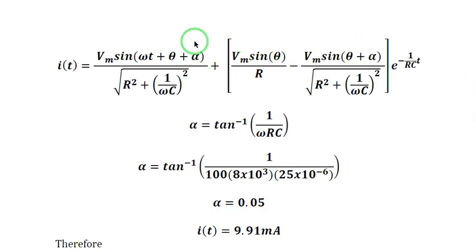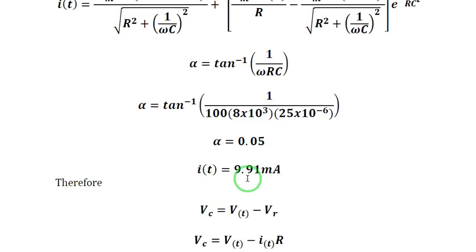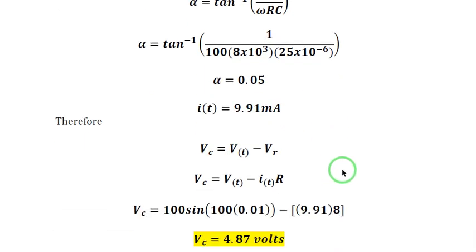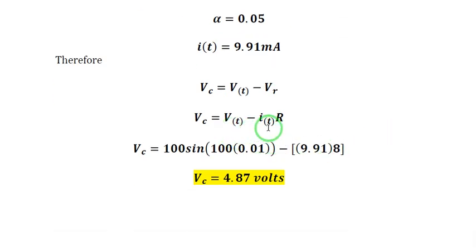Substituting the values for the equation of I(t), I is now equal to 9.91 milliampere. From the equation, we have V(t) minus V sub R equals the capacitor voltage. We know that V sub R is I(t) times R. Substituting V(t) and I(t) times R, we get V of C equal to 4.87 volts at t equal to 0.01 seconds.